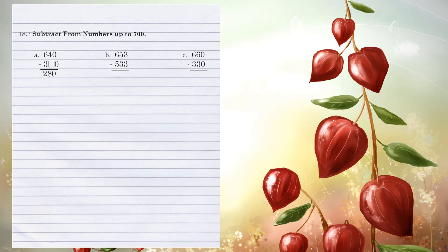Unit 18.3: Subtract from numbers up to 700. Let's look at Example A. We have another missing number to fill in. In the 1's column, 0 minus 0 is 0. In the 10's column, 4 minus a number equals 8 — not possible with a single digit number. So we know we had to borrow from the 100's column to make the 4 a 14. Now 14 minus 6 gives us 8, so 6 is our missing number.